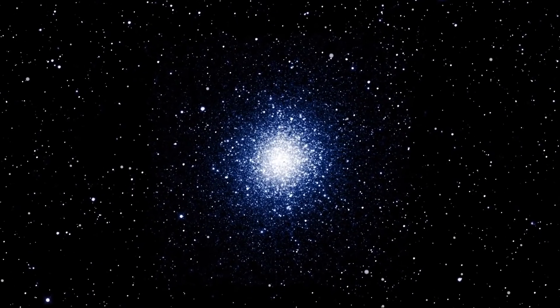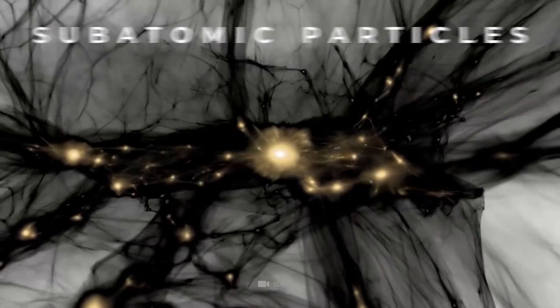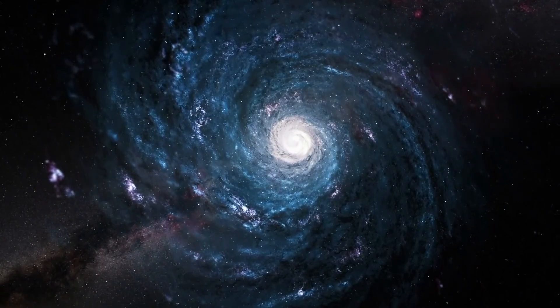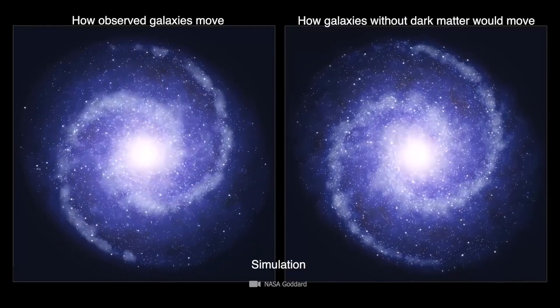Another theory states that dark matter could be made up of trillions upon trillions of subatomic particles that are just too small for us to see, like neutrinos. But until scientists know what dark matter is, they will have to keep observing its effects and trying to study it more.